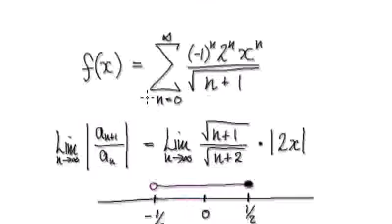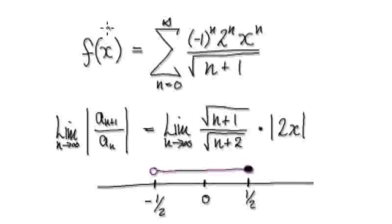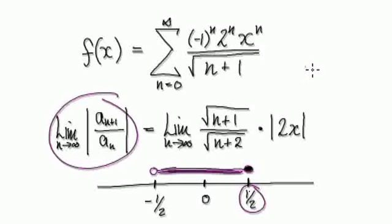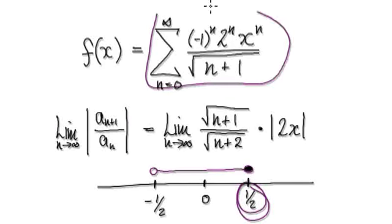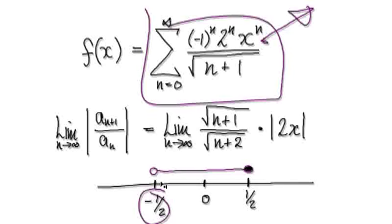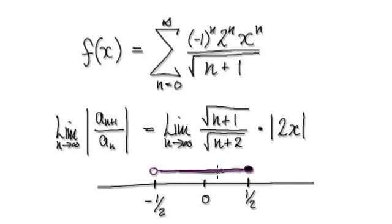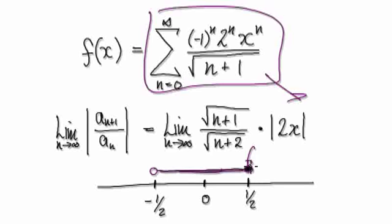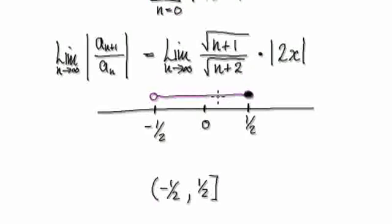Putting it all together, we were finding the domain for this function. Anything strictly between negative a half and a half converges. At x equals positive a half, checking manually confirms convergence — so we fill that endpoint in. At x equals negative a half, the series diverges — so we leave it blank. The domain is the interval (-1/2, 1/2]. The radius of convergence is a half, and it is centered at zero.